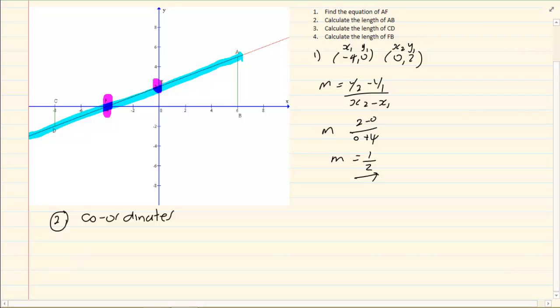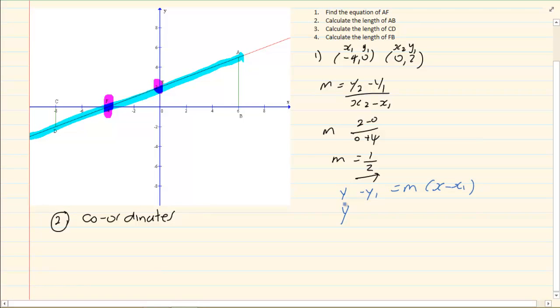Now once we have M, we can use the formula y equals mx plus c or we can just use y minus y1 is equal to m into x minus x1. But it is dependent on you. So we have y minus 2. So I am choosing to use the x2 y2 coordinate. Remember you can also choose to use this one, it is just a substitution but the only rule is it must come from the same bracket. So we have y minus 2 is equal to our M is a half into x minus 0.